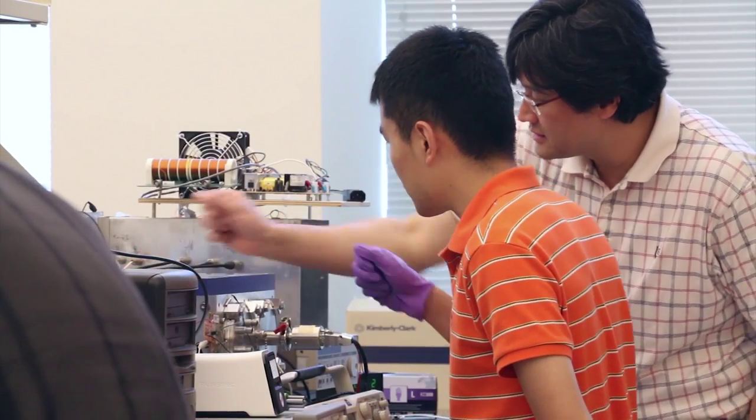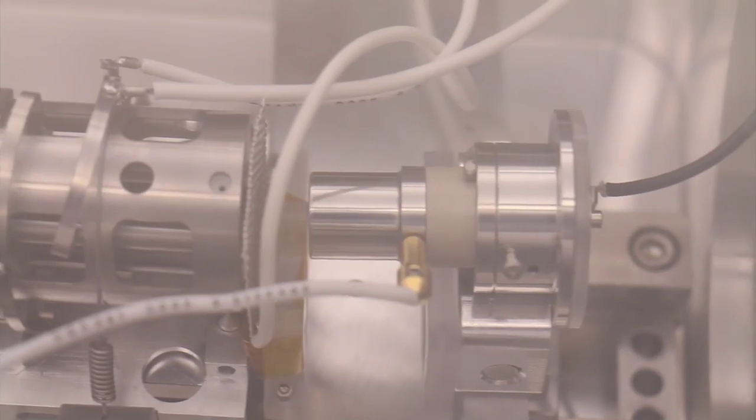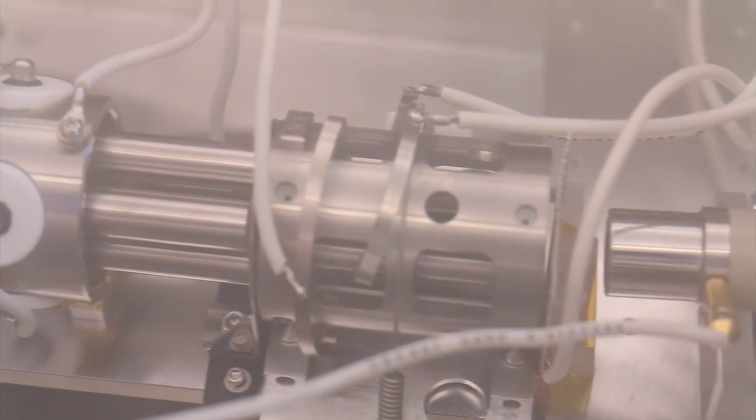The technology was developed by R. Graham Cooks, the Henry B. Haas Distinguished Professor of Chemistry at Purdue University, and Zheng Ouyang, a professor of biomedical engineering, chemistry, and electrical and computer engineering, who also founded the company. Mass spectrometry is a technology used for analysis.